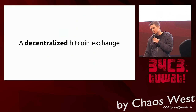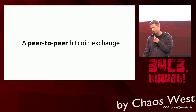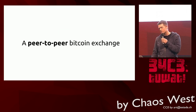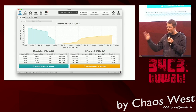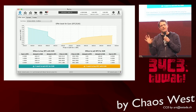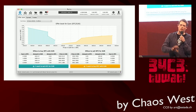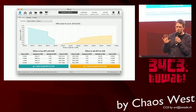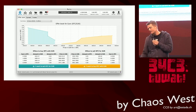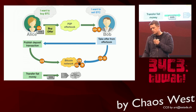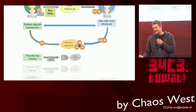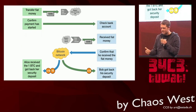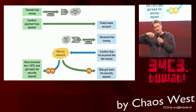Bisq is a decentralized peer-to-peer Bitcoin exchange. It's best described in terms of its major component parts. First, Bisq is a cross-platform desktop application that allows anybody to buy and sell Bitcoin in exchange for national currencies — something that not many decentralized exchanges do — and for other cryptocurrencies. Second, Bisq is a trading protocol that enables individuals to exchange directly with one another over the internet, eliminating the need for trusted third parties to be in the middle of exchange transactions.